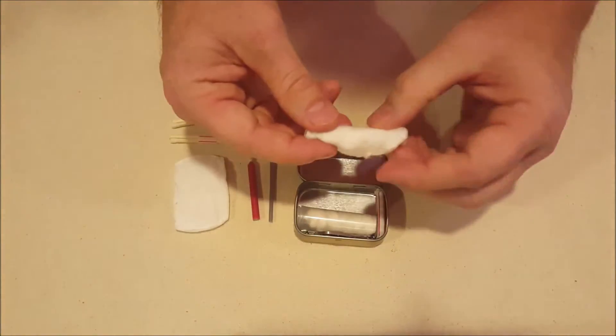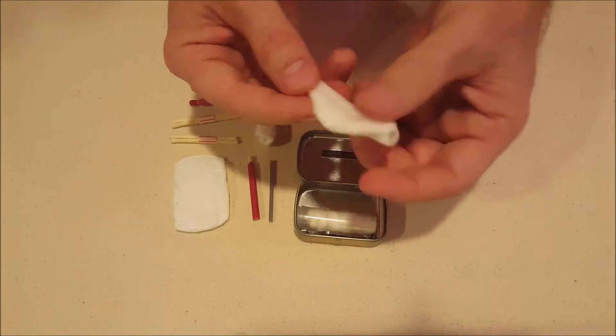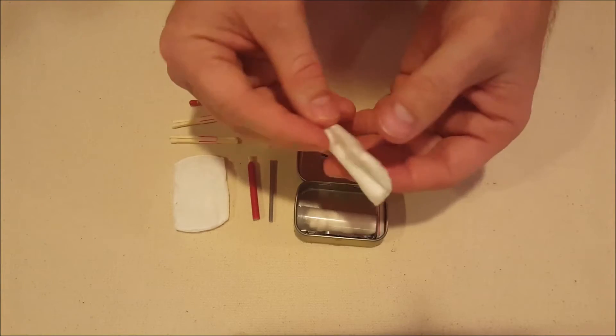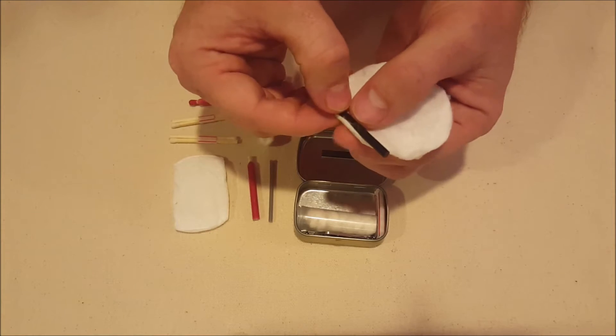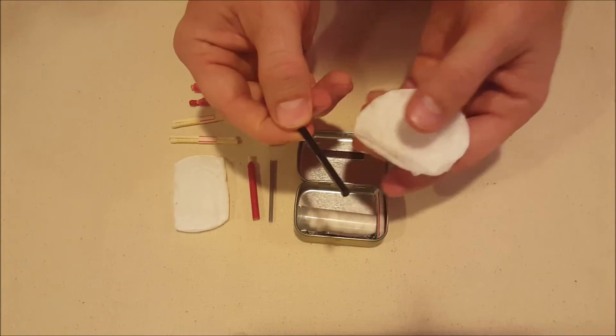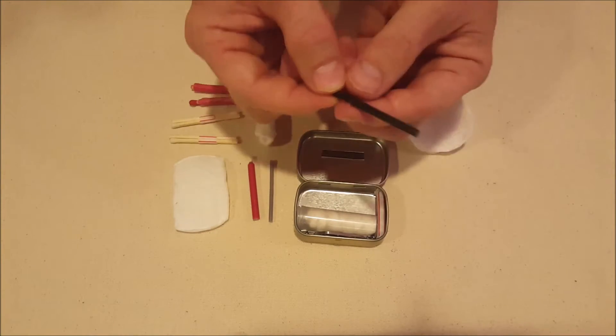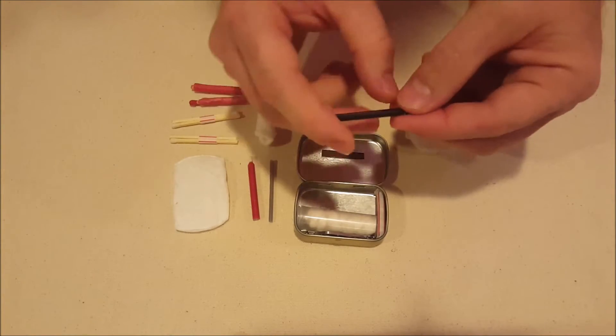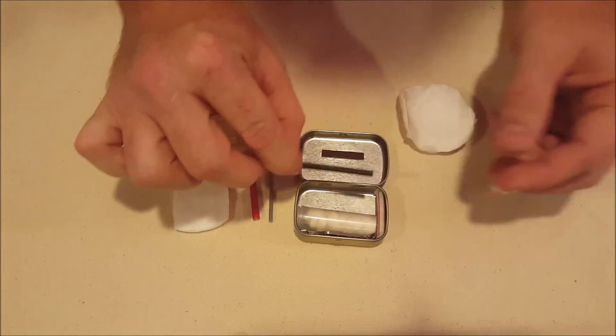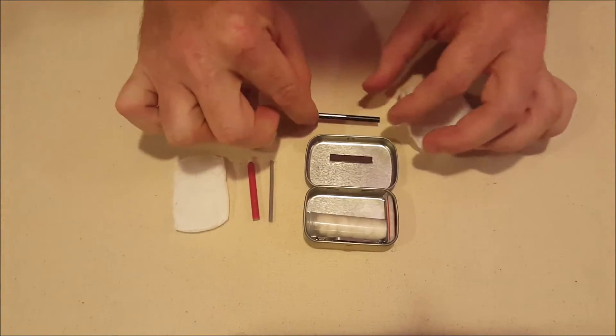And then next on the list in the tin here is another facial tissue, more tinder, obviously. And then wrapped on the inside of it, there's no petroleum jelly, but this is just a small ferrocerium rod to get some sparks going. So, great tiny little ferrocerium rod that fits perfectly in this Altoids Smalls tin.